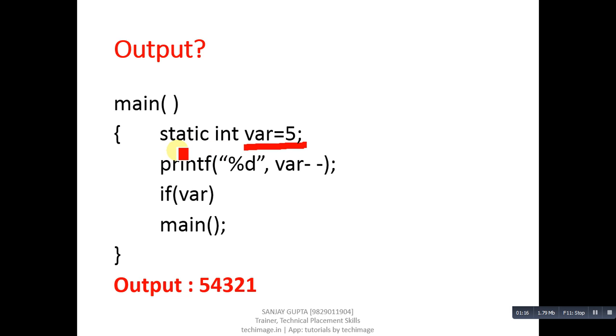Main will call itself. Then again static int VAR equals to 5 will be executed. Now understand the characteristic of static: static variables are initialized only once. This time we called main a second time. The output of first main definition was 4, so it will start from 4. This declaration statement will be ignored and directly printf will be executed. Printf will print 4, and VAR will become 3. Then if VAR is 3, so 3 is true. Again main will be called. Printf will print 3, and VAR will become 2. Similarly, this process will repeat till value of VAR is 1. If VAR is 0, this condition will be false and main function will not be called. Hence output will be 5 4 3 2 and 1. Here two concepts are used: one is static and second is recursion.